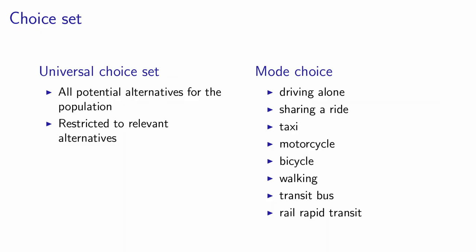The choice set is the list of alternatives, and we need to distinguish between two types of choice sets. The first type I call the universal choice set. This universal choice set is actually the point of view of the analyst — it contains all the potential alternatives that should be considered by the entire population, restricted to those relevant for the analyst. For example, when modeling transportation mode choice for commuters in a city, the universal choice set includes: driving alone, sharing a ride, taxi, motorcycle, bicycle, walking, transit, and rail rapid transit.